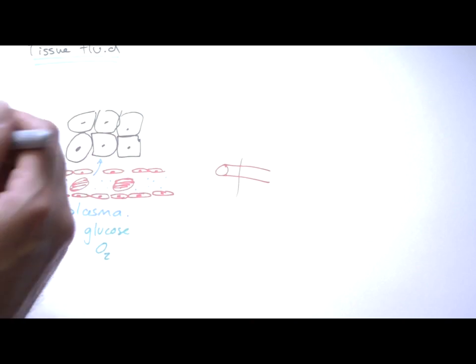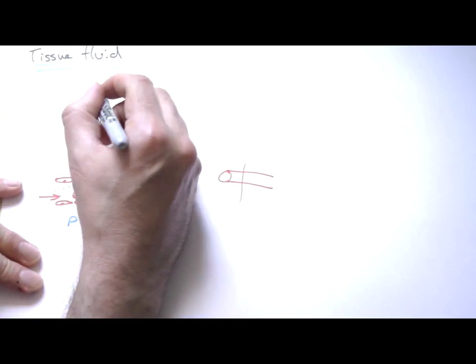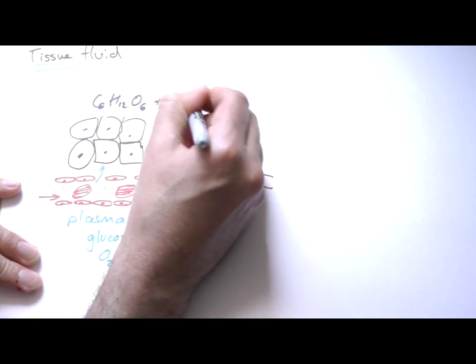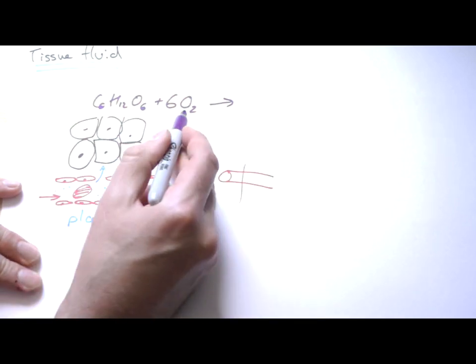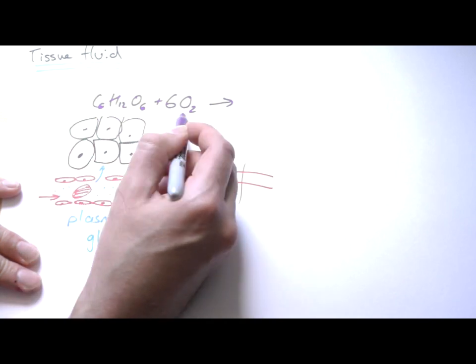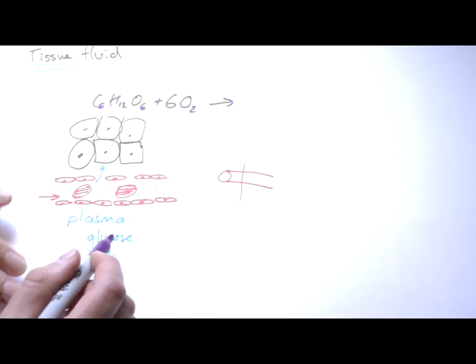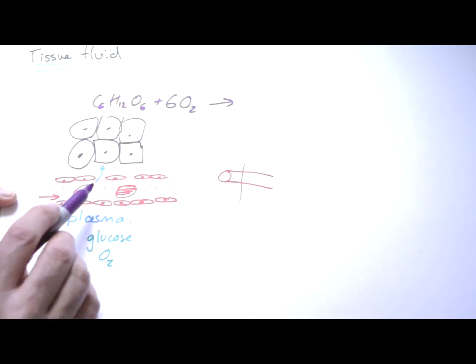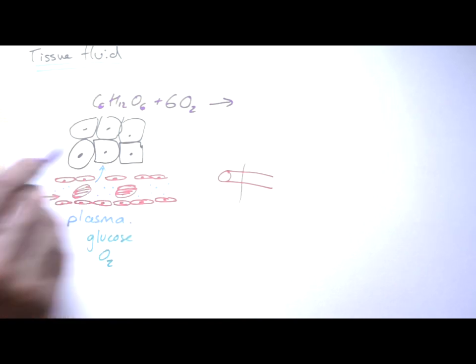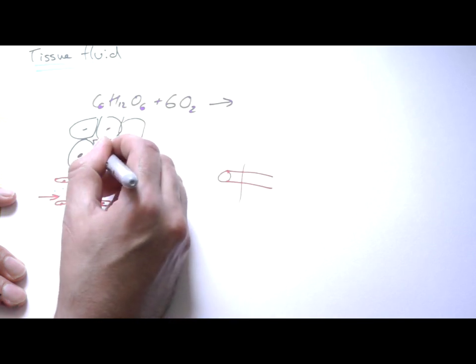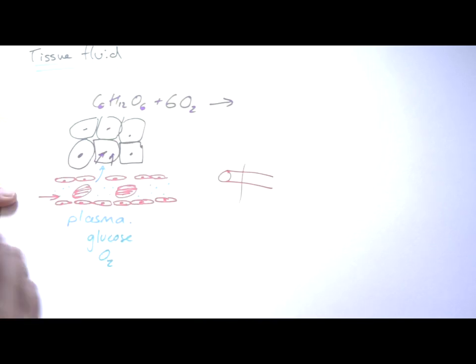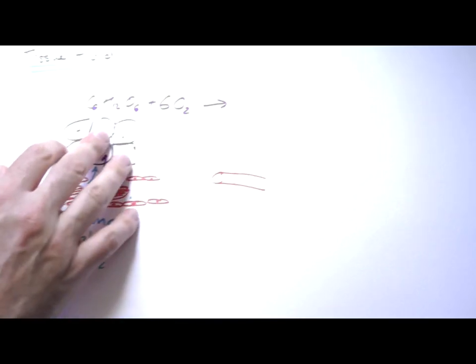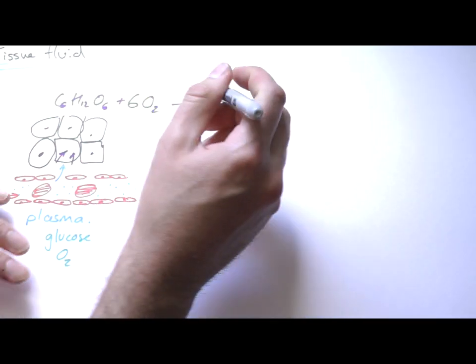Remember that one of the things these cells will be doing is aerobic respiration. There's glucose and oxygen. They're going to be using up glucose and oxygen pretty quickly, so there's a higher concentration of glucose and oxygen in the tissue fluid than in the cells. What that tells us is that oxygen and glucose will diffuse into these cells.